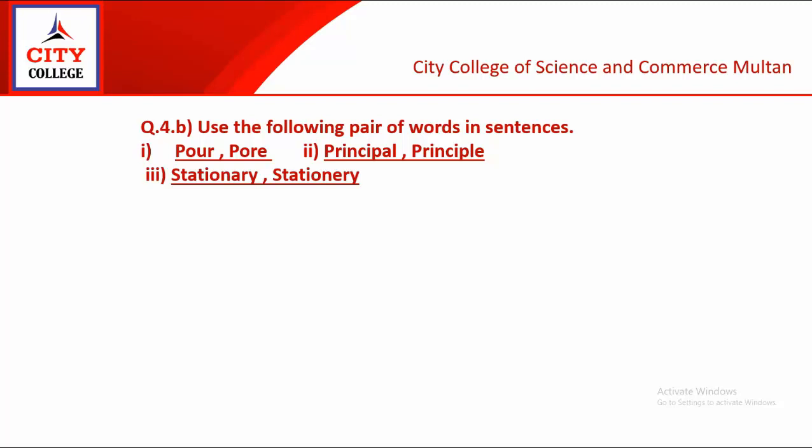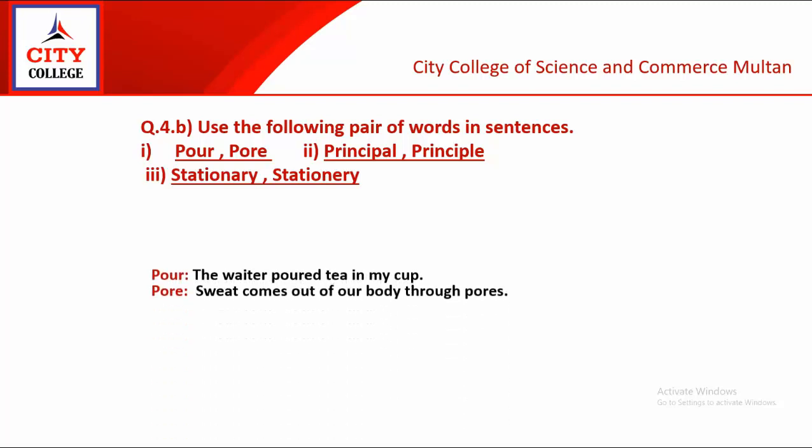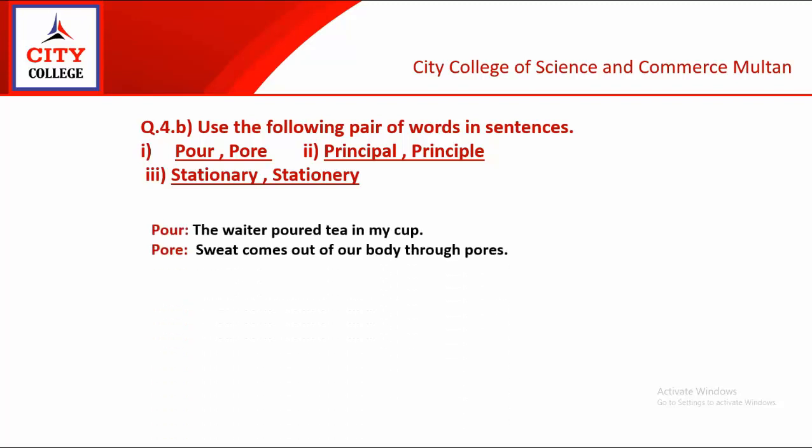Question number 4, part B: Use the following pair of words in sentences. The first pair is pour and pore. P-O-U-R 'pour' means undelna, dalna. Sentence: The waiter poured tea in my cup. P-O-R-E 'pore' means chote chote masam, surakh. Sentence: Sweat comes out of her body through pores.